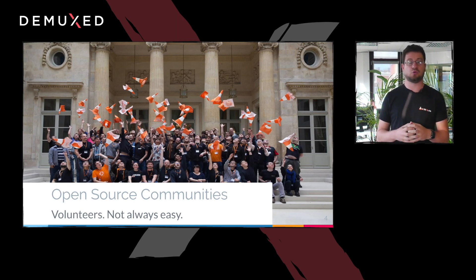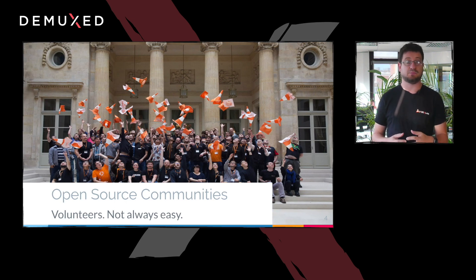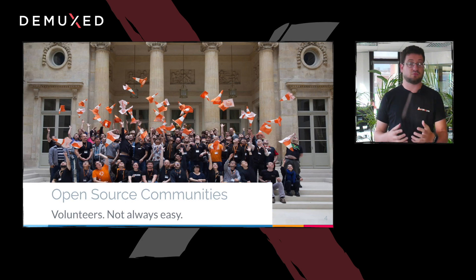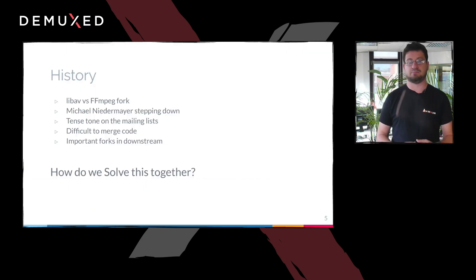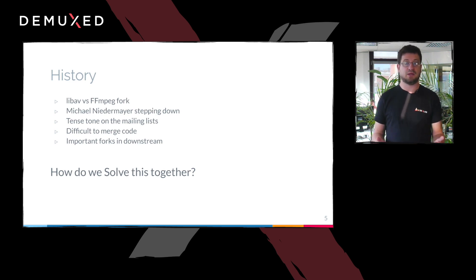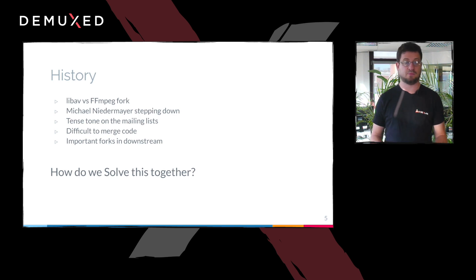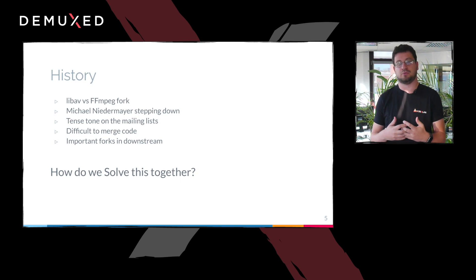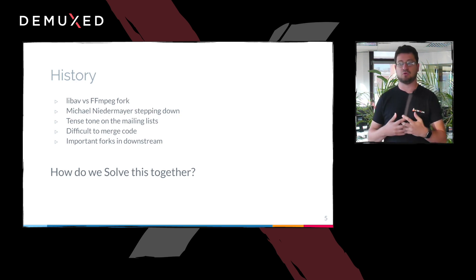Most of the people who are using and working on FFmpeg are not paid to do that. And therefore, as with all open-source and free software communities, it's difficult. In the past, if you followed the FFmpeg community, there were a few hiccups. There was a big LibAV vs FFmpeg fork that happened almost 10 years ago, which is now almost solved. The main maintainer, Michael Niedermayer, who was on FFmpeg since the time of Fabrice Bellard, stepped down as a leader a few years ago, and since then no one stepped up. The tone on the mailing list is quite tense, and many people are now afraid to send patches upstream because they don't believe the patches will get in. The reviews are very harsh, and therefore it's very difficult to merge your code, which makes the tone even worse.